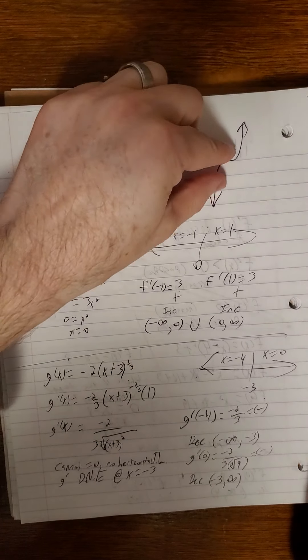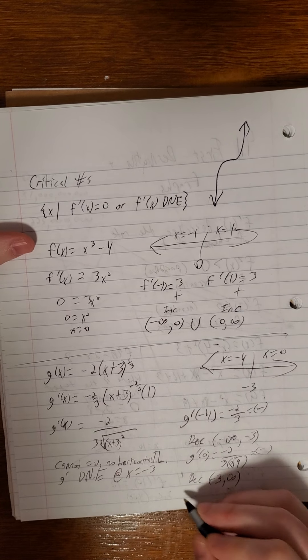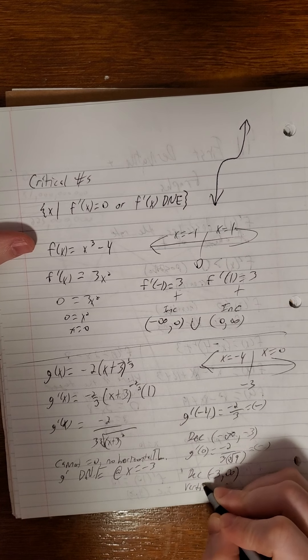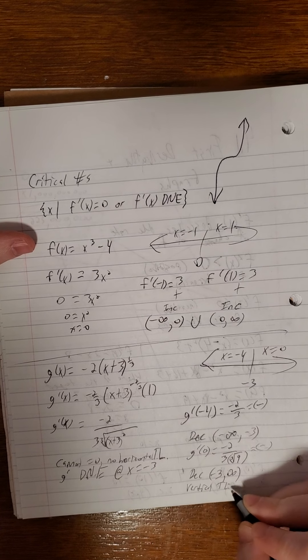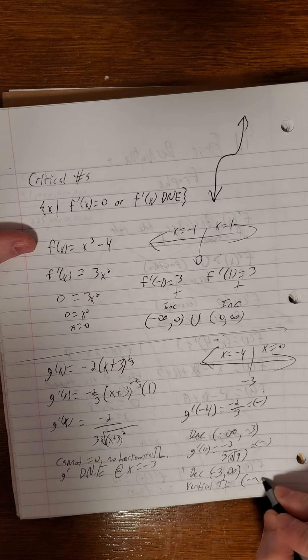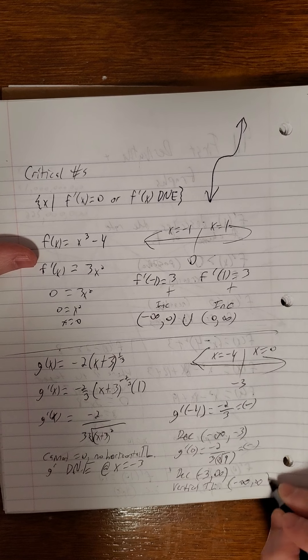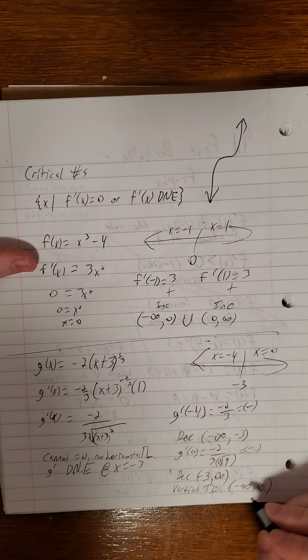But this time, instead of a horizontal tangent line, this one actually had a vertical tangent line. So this one, we can sandwich those together and say this is decreasing negative infinity to infinity.